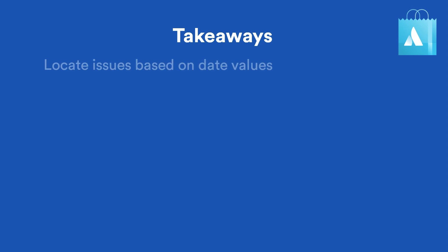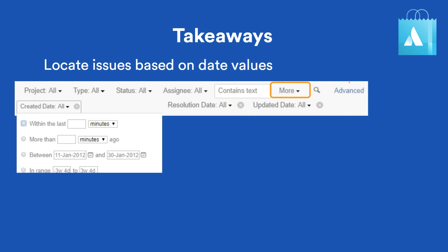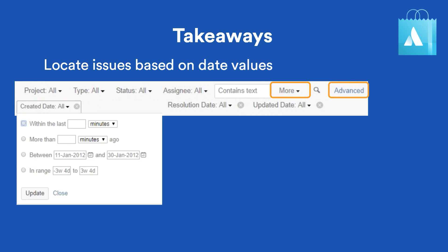In this tutorial, you learned to leverage Jira's search capabilities to locate issues based on date values. You can search on dates using either Basic Search or JQL in Advanced Search. We saw examples for both.